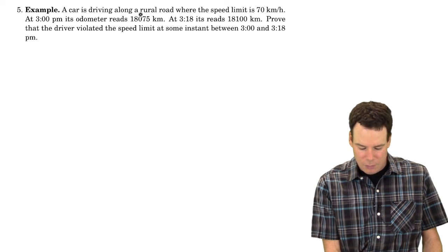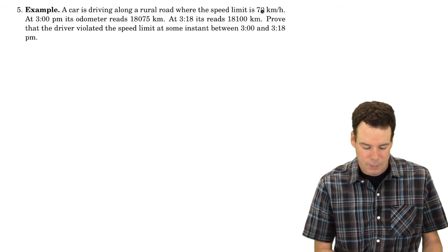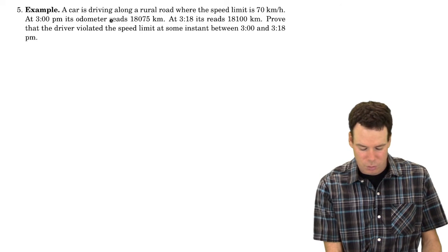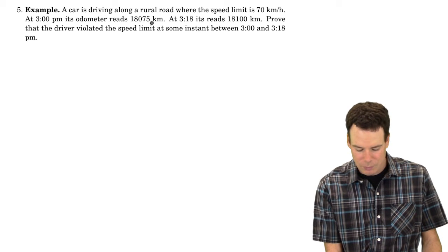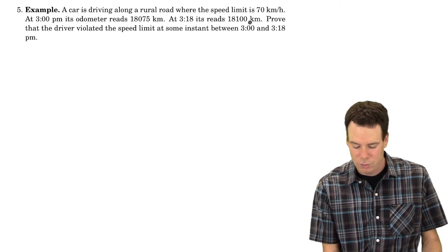In this example, a car is driving along a rural road where the speed limit is 70 kilometers per hour. At 3 o'clock, its odometer reads 18,075 kilometers. 18 minutes later, it reads 18,100 kilometers.